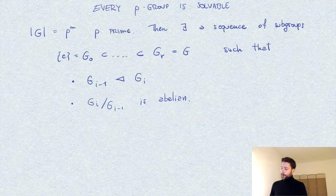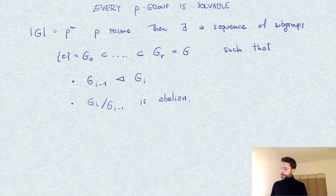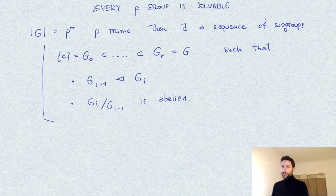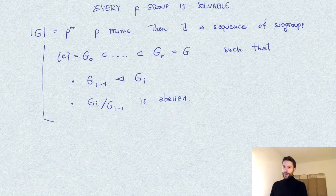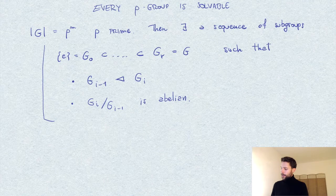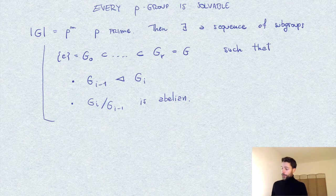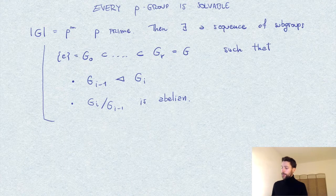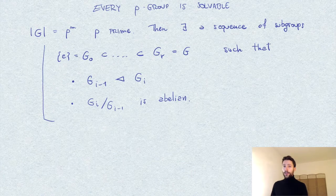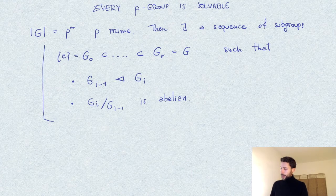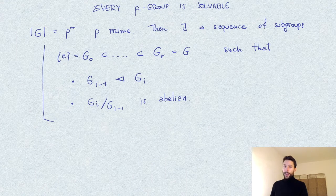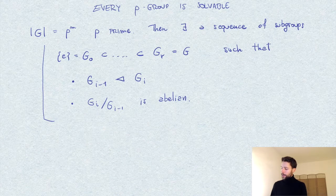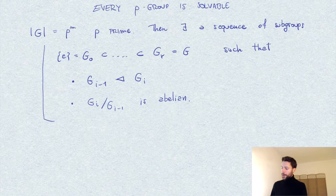In other words, this property of being solvable is a sort of measure of how non-abelian a group is. For an abelian group, we have an obvious such sequence which is just G_0 the trivial group and G_1 equal to the whole group. In the non-abelian case, the minimal length of such a sequence could be considered a measure of non-abelianity.